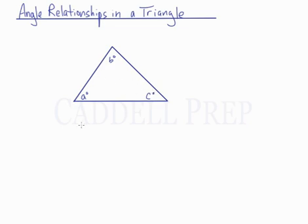If you were to add these all up, A plus B plus C, it will always add up to 180. The sum of the interior angles of a triangle is 180 degrees.